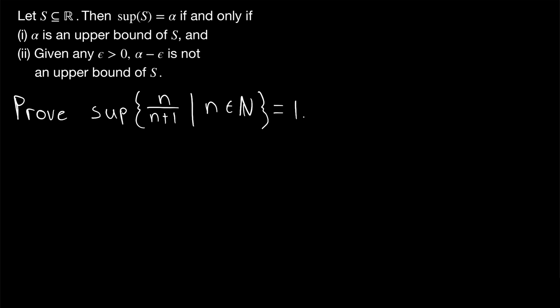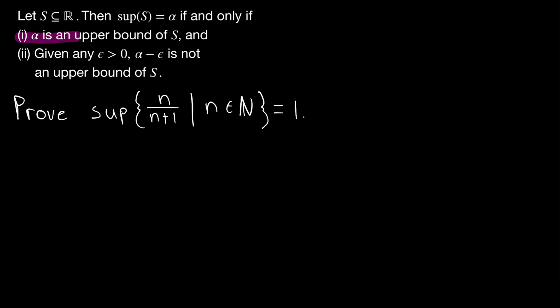I'll leave a link in the description to a lesson where we prove this is equivalent to the original definition. This part of the definition says the supremum needs to be an upper bound, and the second part says that if we reduce the supremum at all, we no longer have an upper bound. Should make sense, because the supremum is the least upper bound.